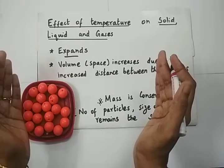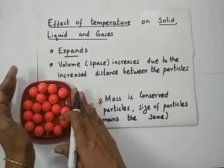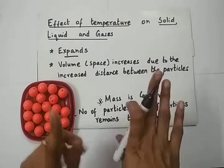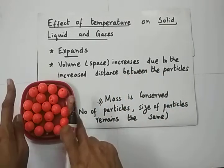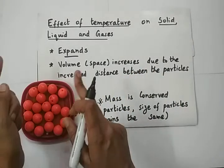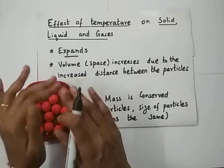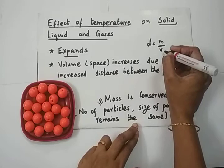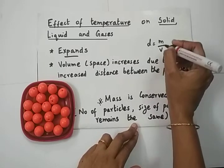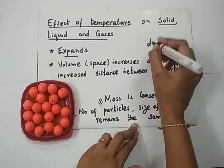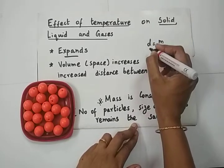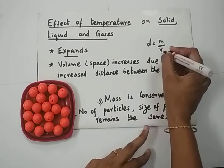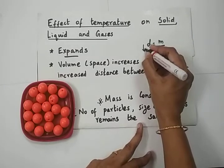This is called expansion. The volume of matter changes; the size and number of particles do not change during heating. Since the mass is conserved and only the volume increases, the density decreases — because D equals M divided by V, mass per unit volume of a substance. The density of a substance is constant at a particular temperature and pressure. When there is an increase in temperature, the volume increases, so when the denominator increases, the density decreases.